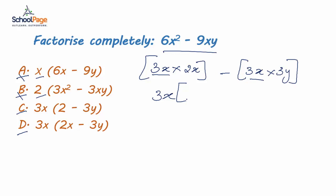Now that we have picked out the greatest common factor, we are left with 2x minus 3y on the other side. So, the solution for the problem is 3x into 2x minus 3y.